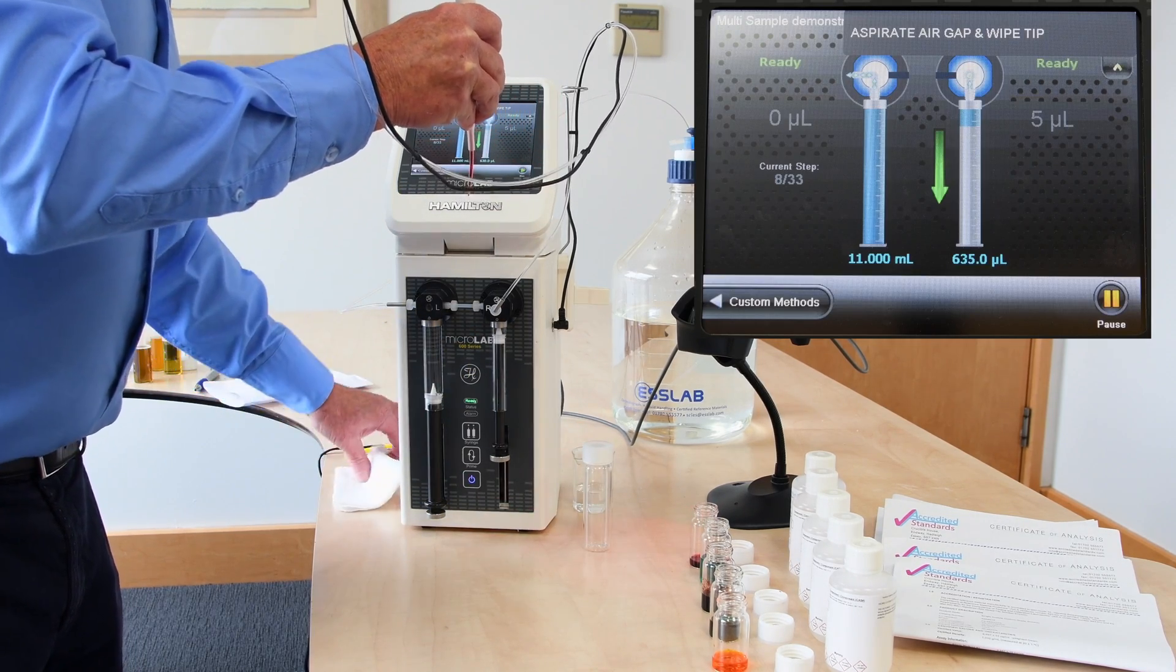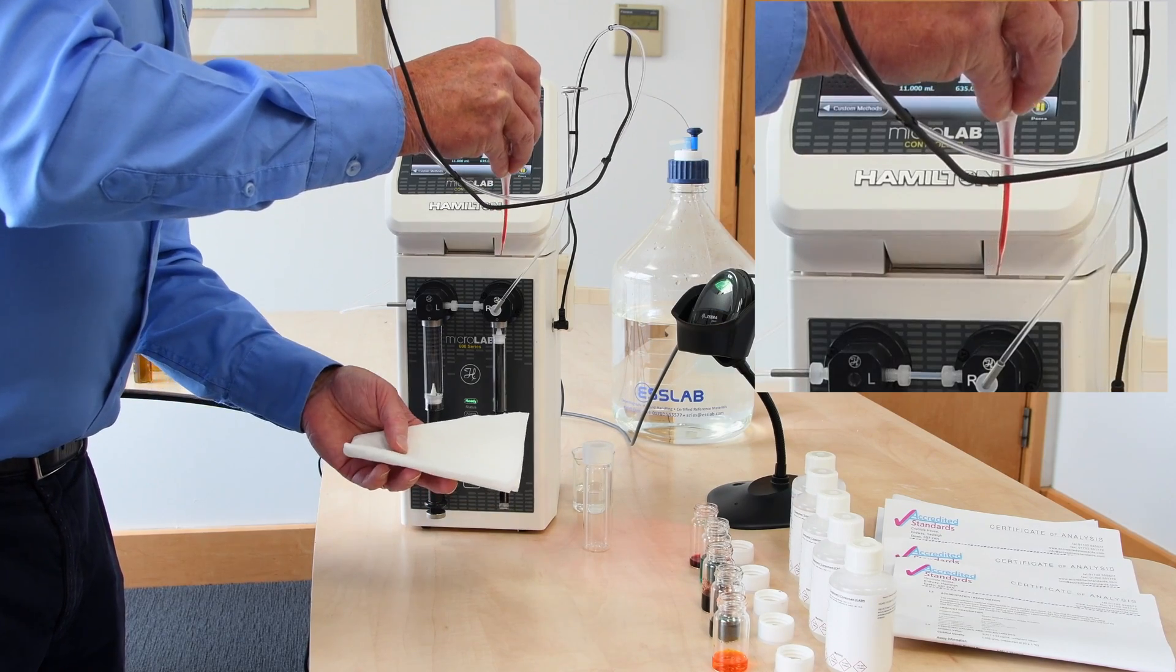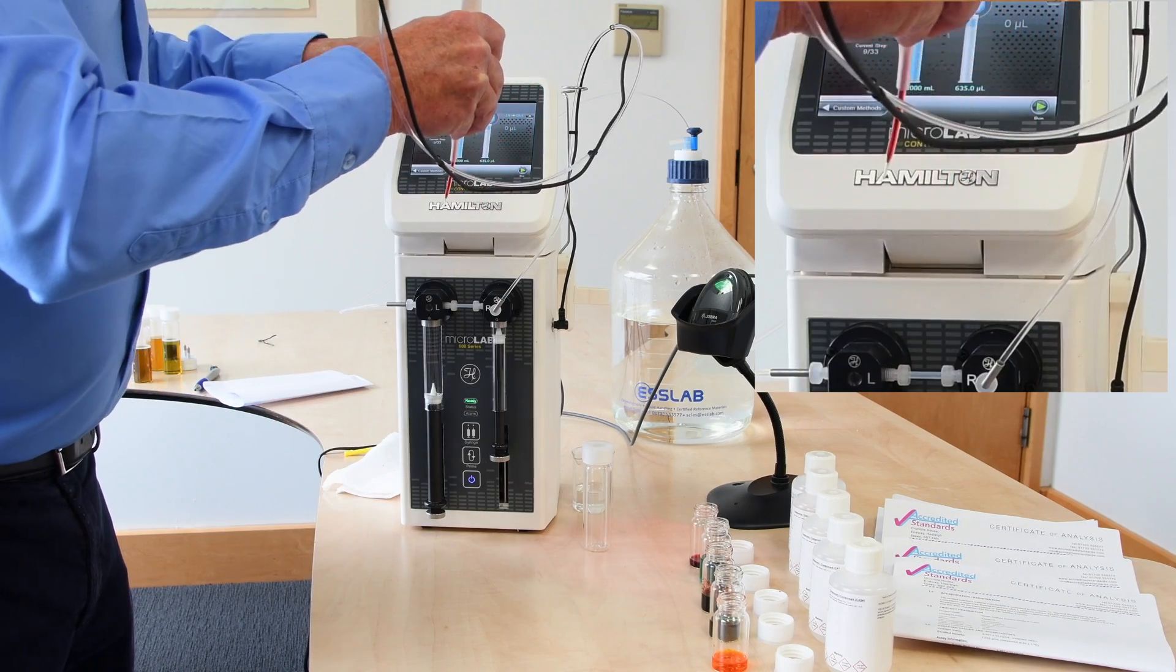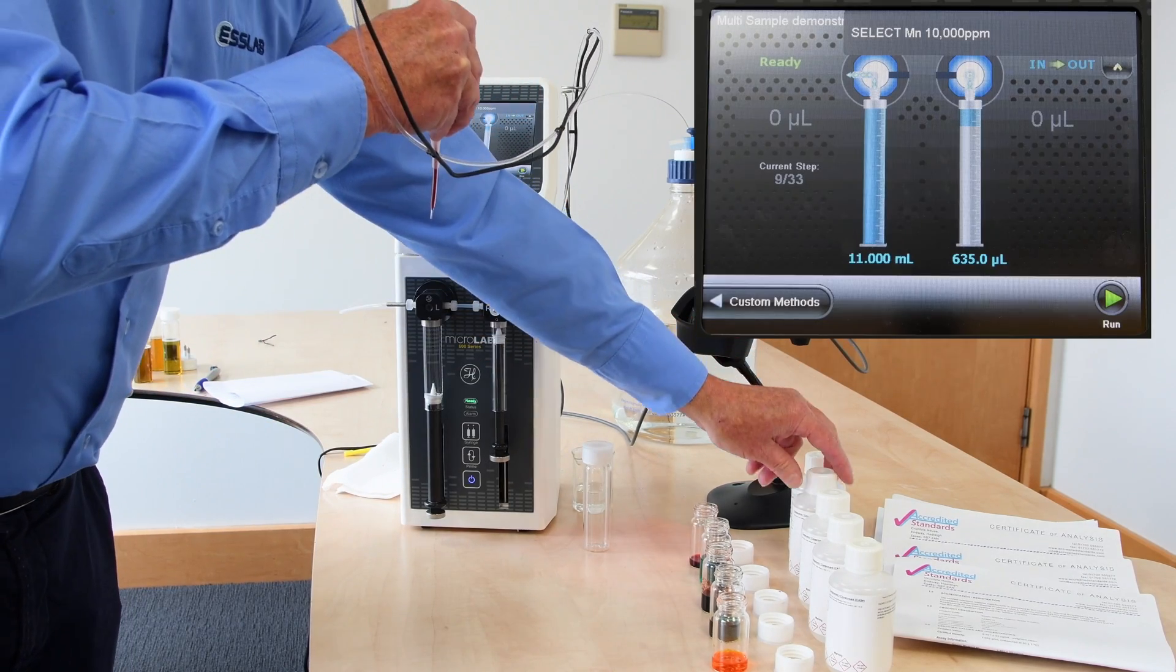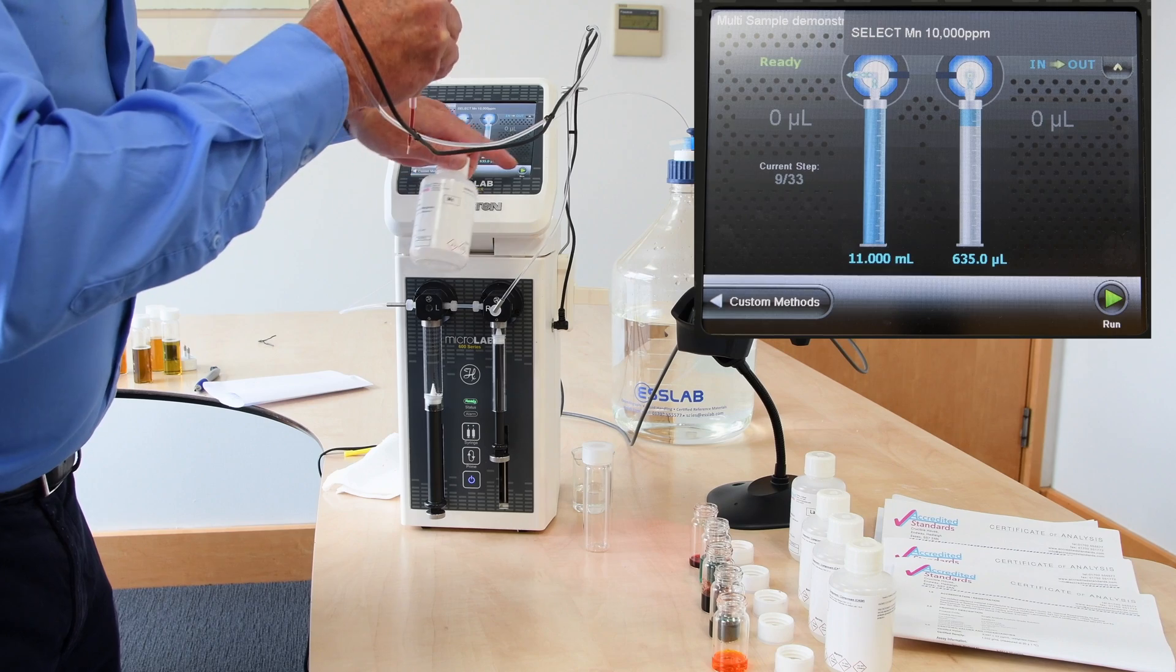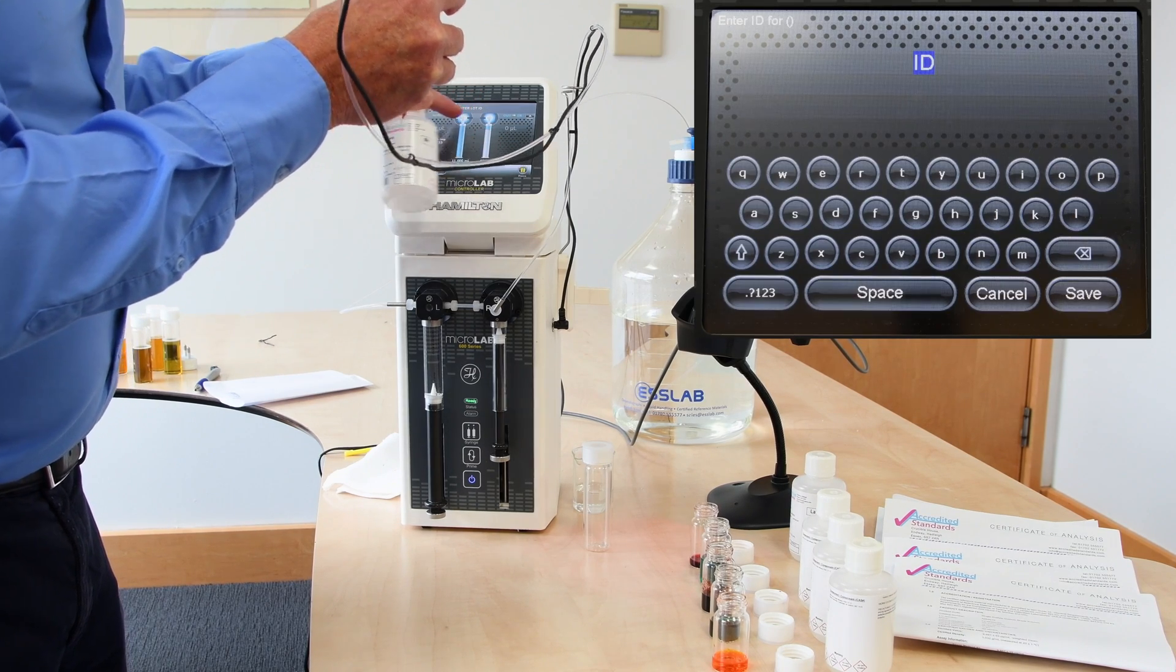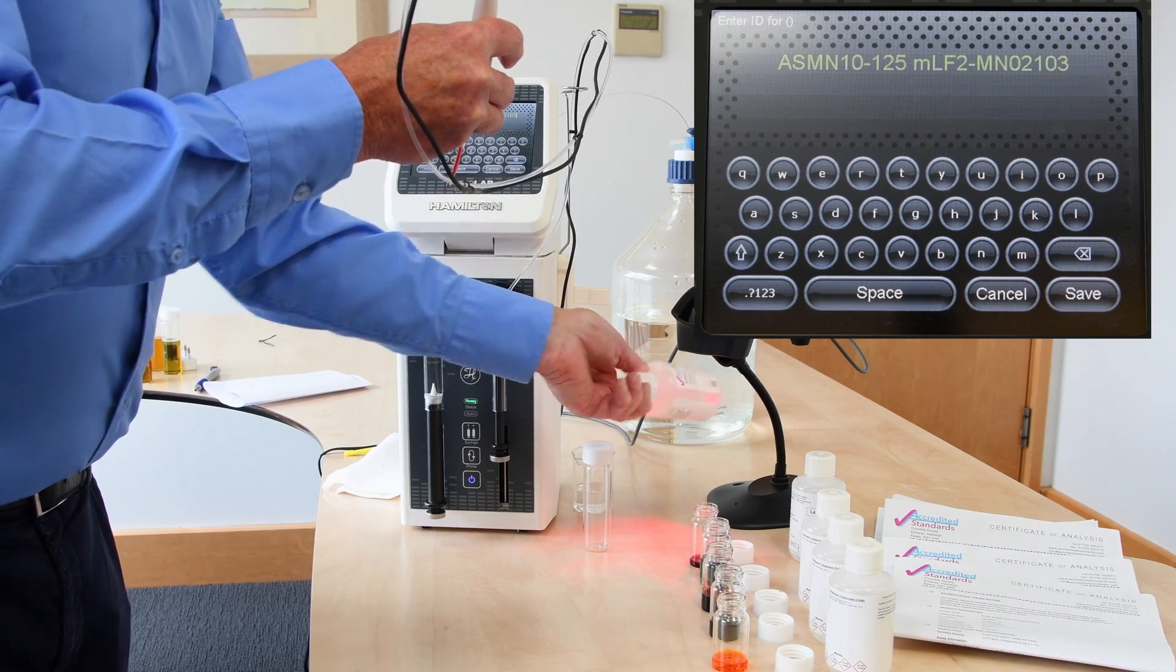It's then asked me to aspirate an air gap and wipe tip again. I've done just that and I can wipe the tip. It's now asked me to select the manganese sample, which I have. And I can take the next step on. Enter the lot ID as you can see in the display, and then we can scan that.